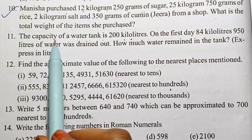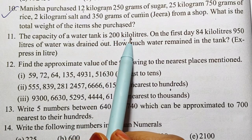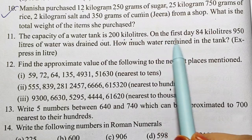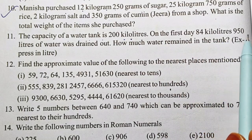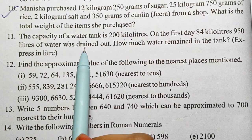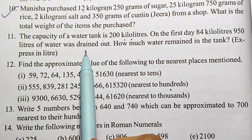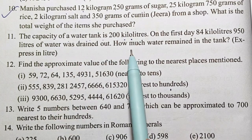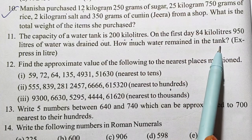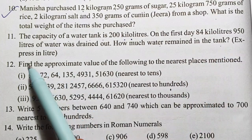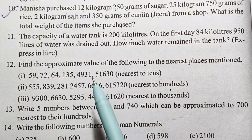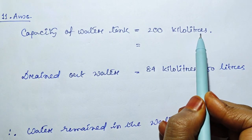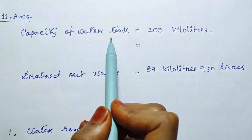Question number 11. The capacity of a water tank is 200 kg. On the first day, 84 kg and 950 kg of water was drained out. How much water remained in the tank? The tank is 200 kg. Express in liters. 1 liter is 1 kg. The capacity of the water tank is 200 kg.